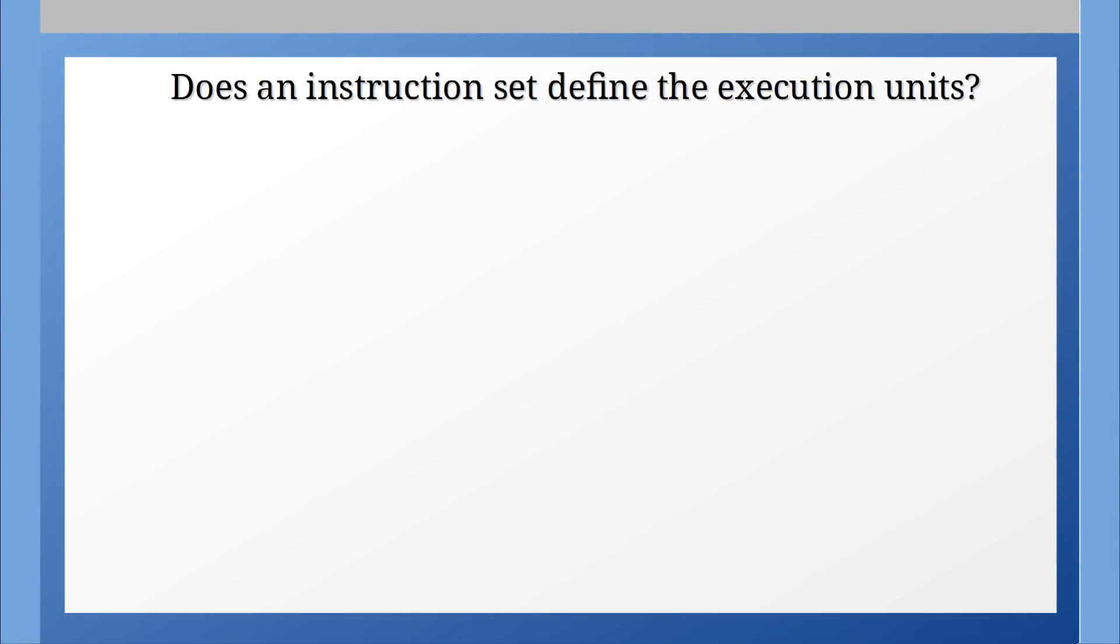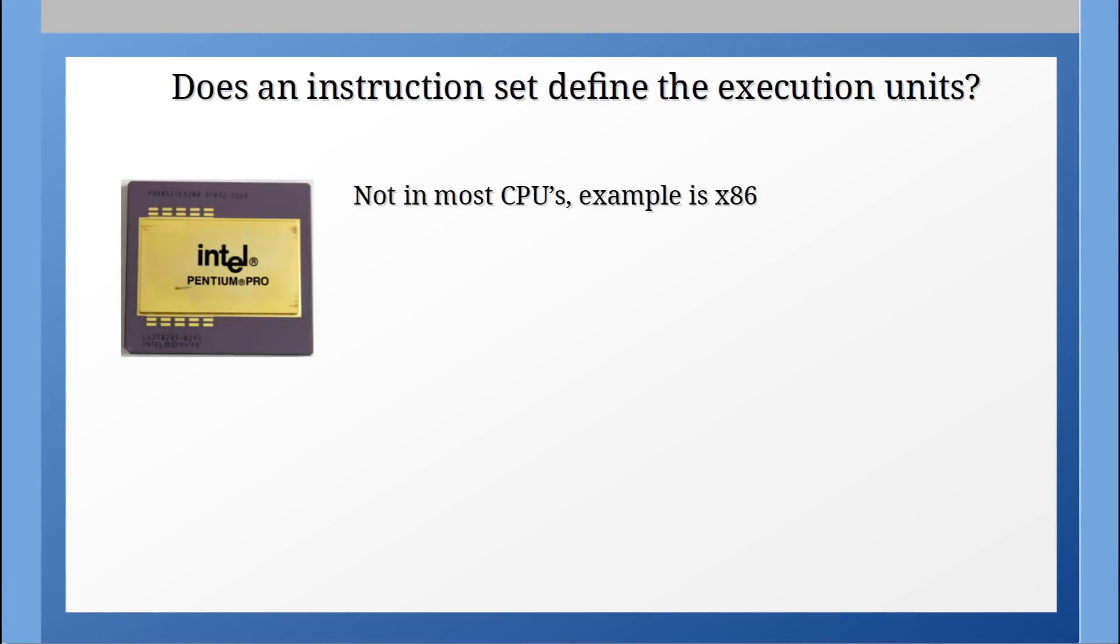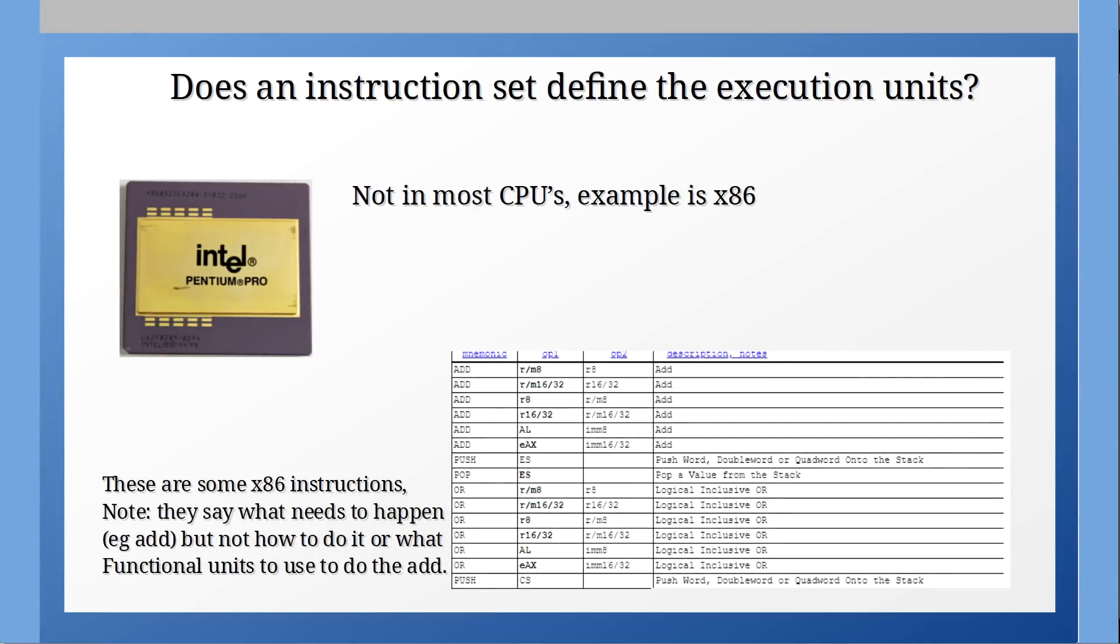Looking at the execution units, an instruction set like x86 doesn't necessarily define what execution units a CPU has to have. There are no execution unit specific instructions, just operation specific, and the CPU figures out what hardware to use and when to use it.